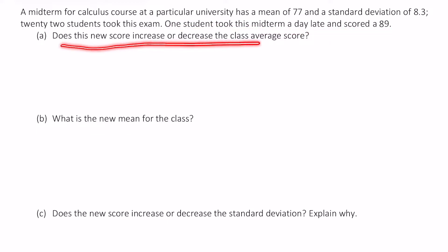Does this new score increase or decrease the average score? Well, without computing anything, since 89 is larger than 77, we know that the mean will increase. This is the same effect that would happen if we remove a lower score of like 63. 63 is lower than the mean and if we remove that score the mean would also go up.